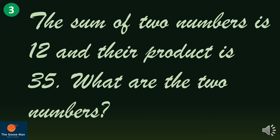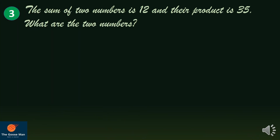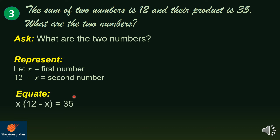Let us have the third question. The sum of two numbers is 12 and their product is 35. What are the two numbers? We want to find the two numbers. We will represent x as the first number, while the second number equals 12 minus x. Substituting the first and second numbers, we have x times (12 minus x) equals 35, since this equals the product of the two numbers.